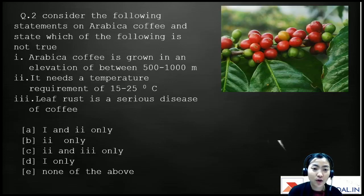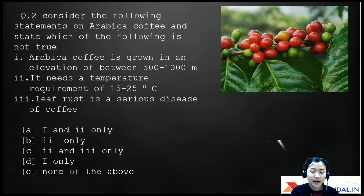The second question: consider the following statements on arabica coffee and identify which is not true. A) Arabica coffee is grown at an elevation of 500 to 1000 meters. B) It needs a temperature of 15 to 25 degrees Celsius. C) Leaf rust is a serious disease of coffee. The right answer is A.